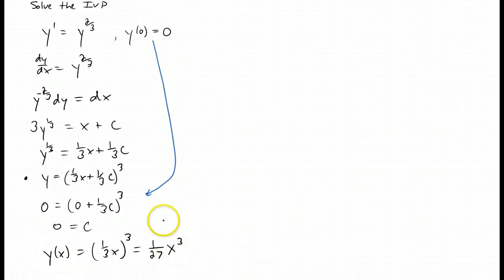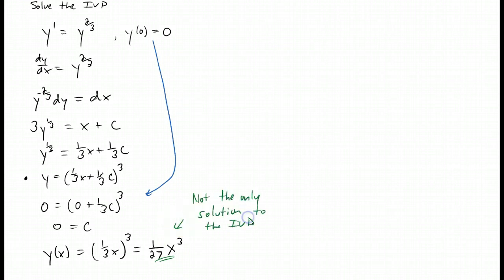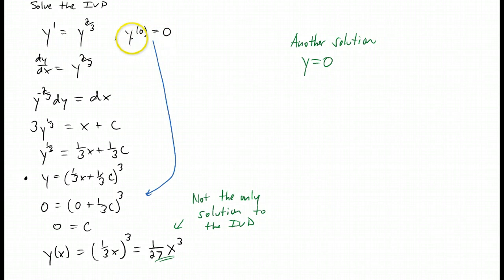If you plugged in this y into the differential equation, it should work — you can double-check your work — and the initial value checks out as well. So why are we doing it? The reason is it's not the only solution to the initial value problem. You could inspect this just by looking at it and come up with a very simple solution: another solution to this initial value problem is just simply y equals zero. That's just a horizontal line right on the x-axis. If you plug that into the differential equation, it works — you get zero equals zero — and it satisfies the initial condition.